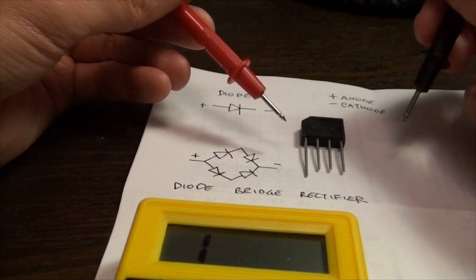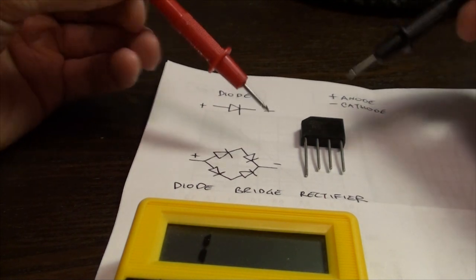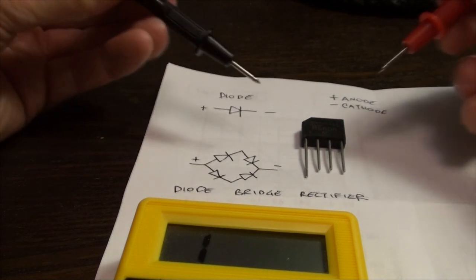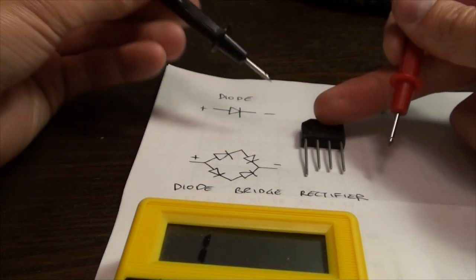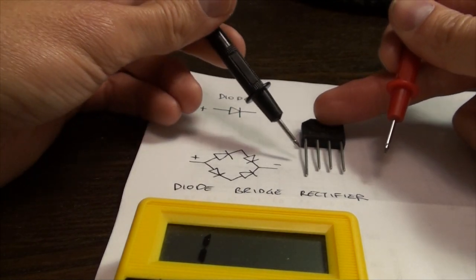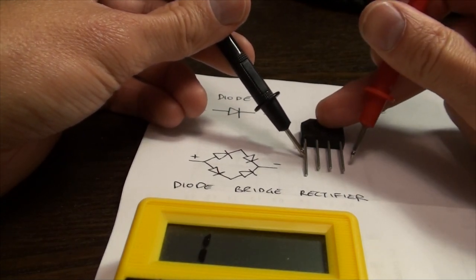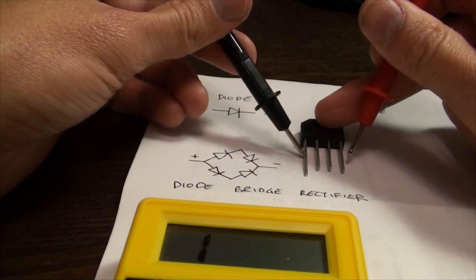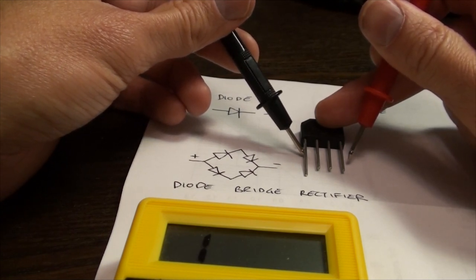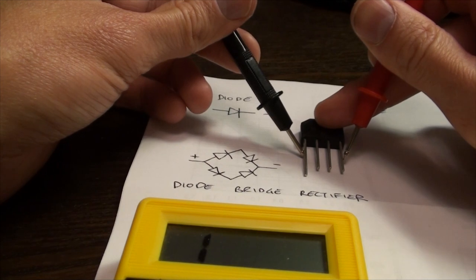But the true test will be if you switch around your probes. Now, if I take my black probe on the positive side and put my red probe on the negative side, if it shows any reading at all, then you have a broken diode bridge rectifier.